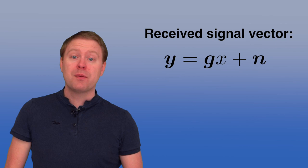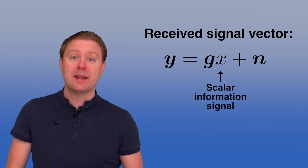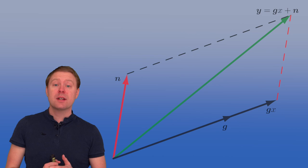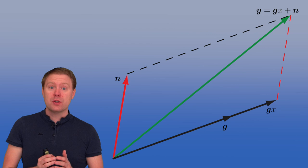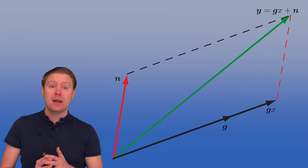Everything is vectors here except X, which is the scalar information signal with power Q measured in energy per symbol. Since the received signal Y is a summation of vectors, we can show it geometrically. We first take the channel vector G, rescale it using the information signal X, and then add a random noise vector N. That gives us Y, our received signal.